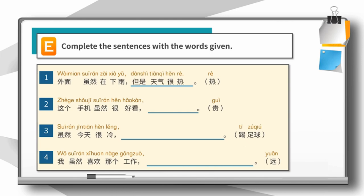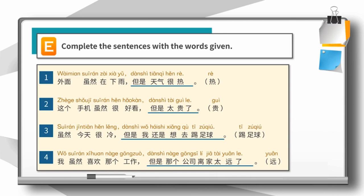一. 外面虽然在下雨, 但是天气很热. 二. 这个手机虽然很好看, 但是太贵了. 三. 虽然今天很冷, 但是我还是想去踢足球. 四. 我虽然喜欢那个工作, 但是那个公司离家太远了.